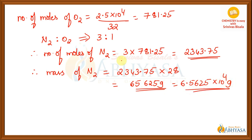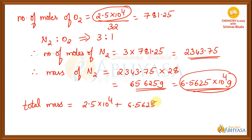So, we already know the mass of oxygen, that is this much and we got the mass of nitrogen. Then simply add both of them, we will be getting the mass of the gaseous mixture. So, total mass of the gaseous mixture, this is 2.5 into 10 power 4 plus 6.5625 into 10 to the power of 4. And this value is equal to 9.0625 into 10 to the power of 4 grams.